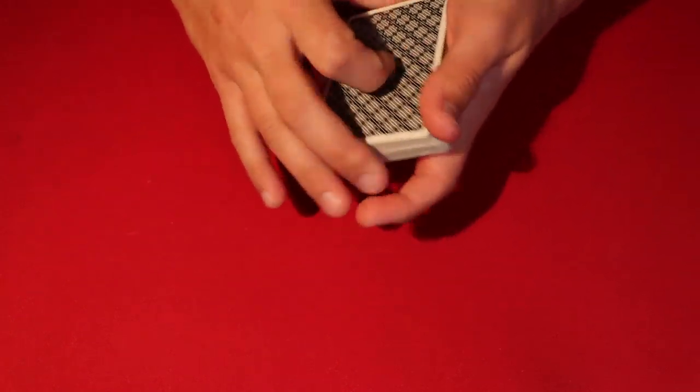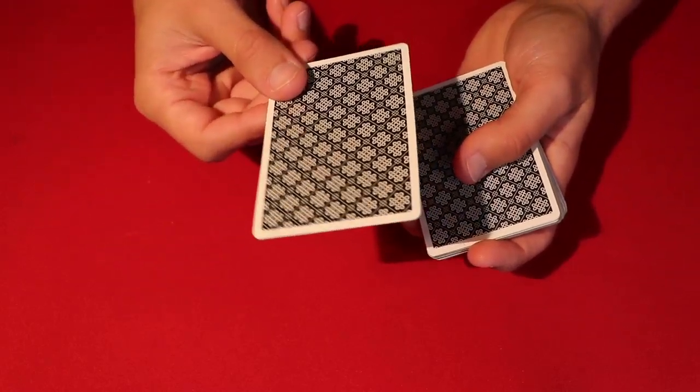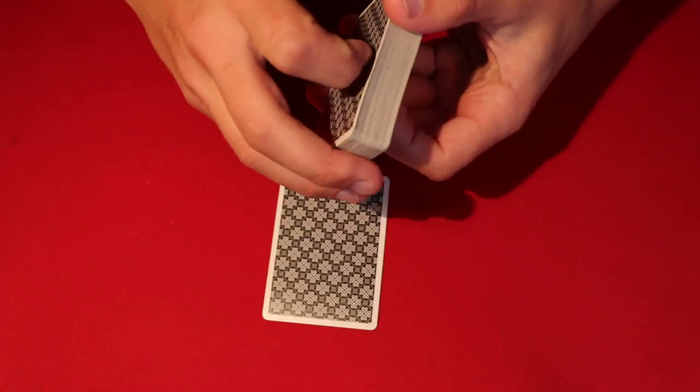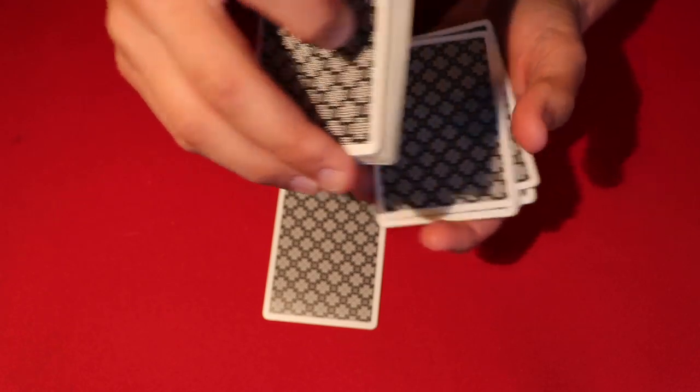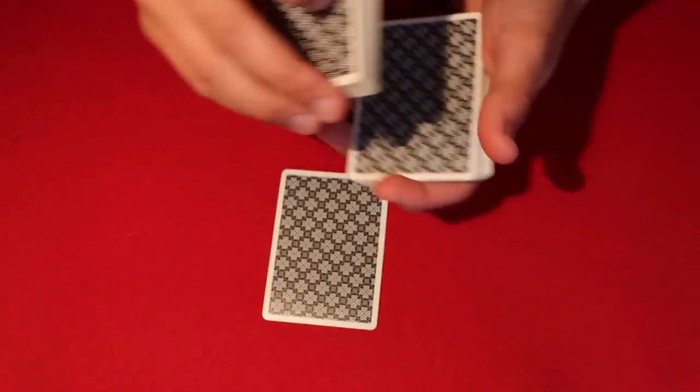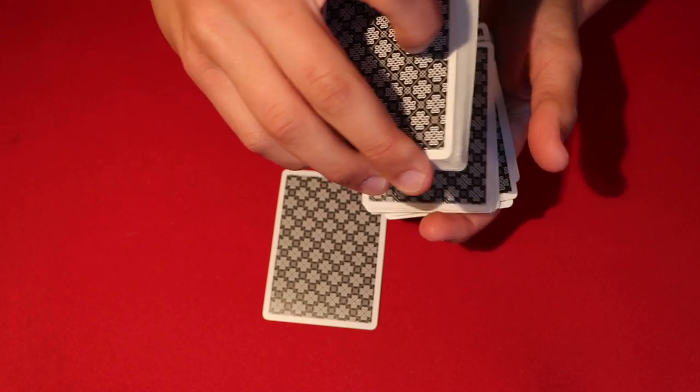The method I used in the video was I just dribbled the cards halfway down. You don't have to tell the spectators to tell you when to stop or anything. You just casually dribble and say, alright, let's put your card back into the middle of the deck.